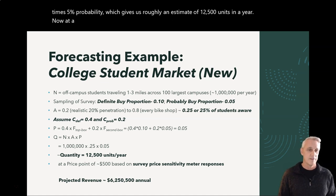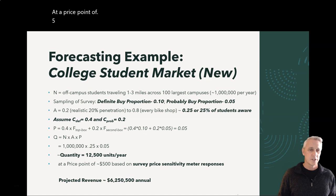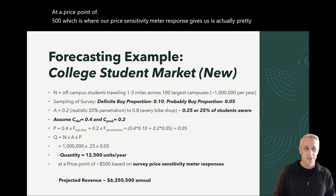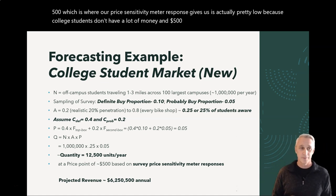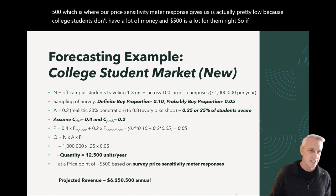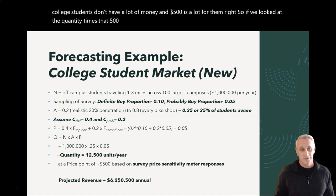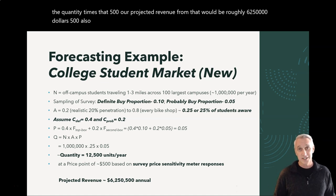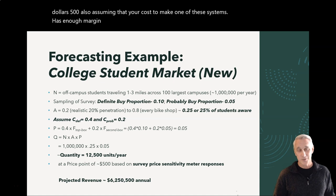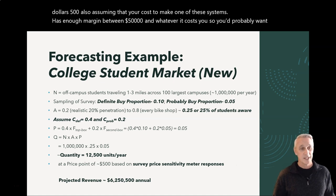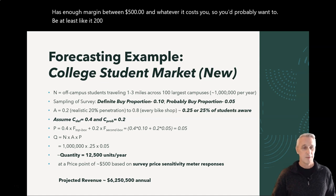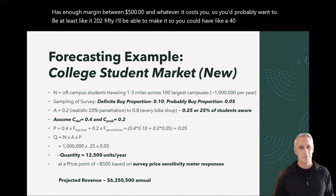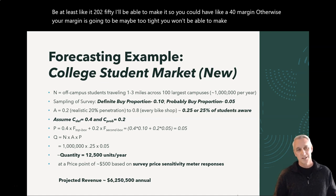At a price point of $500 — which is where the price sensitivity meter response puts us — revenue is actually pretty low because college students don't have a lot of money and $500 is a lot for them. So quantity times $500 gives projected revenue of roughly $6,250,000. You'd also need to ensure your cost to make one of these systems has enough margin — you'd probably want to be at least around $200-$250 to make it so you could have like a 40% margin, otherwise your margins are going to be too tight and you won't be able to make the business go. So that's one market.